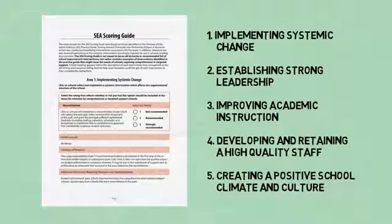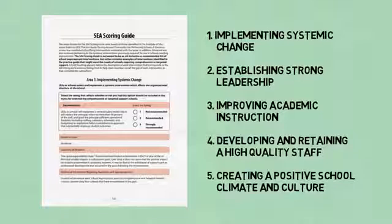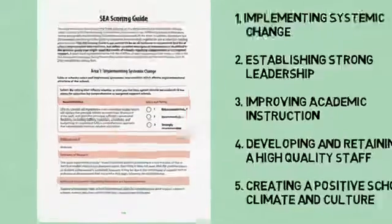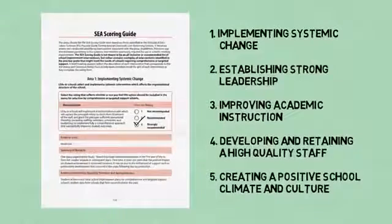The scoring guide contains examples of interventions in each area, the ESSA evidence level, a summary of research, additional information that teams may wish to consider, and guiding questions that may be helpful in determining a rating for the intervention. Team members individually rate each intervention as not recommended, recommended, or strongly recommended.